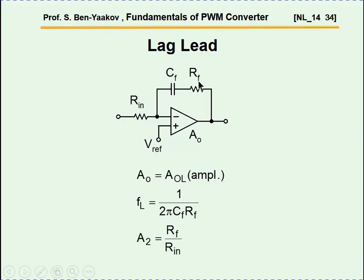We can understand the operation of this network by looking at the two frequency extremes. At very low frequency, the impedance of the capacitor is very high, so the gain of this block is basically the open-loop gain of the operational amplifier — which is very high, giving a very small DC error in our converter. At high frequency, the capacitor impedance becomes much smaller than RF, so the gain will be RF over RIN. We will choose this ratio to be the value needed to close the loop.